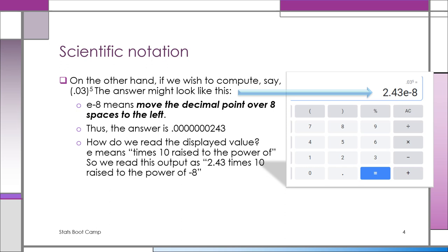How do we read scientific notation if we need to read it out loud? Well, e means times 10 raised to the power of. That's what the e means there. It's not the word exponent. It's not the base of natural logarithms. It's just a way of expressing scientific notation. And so this one would be 2.43 times 10 raised to the power of negative 8. We'll see more about that later.